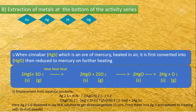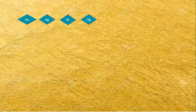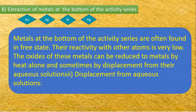Aurum (gold), Argentum (silver), Platinum, and Hydrargyrum (mercury) come under low-reactive metals. They are available in nature — in the earth's crust — in the form of oxides and sulfides. Metals at the bottom of the activity series are often found in the free state because they are not so active. They are unable to combine with other elements to form a compound, which is why their reactivity with other atoms is very low.